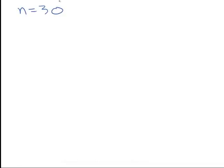Let's look at a few more examples to make sure you can figure out when order matters or not. There are 30 people in your group and you are going to choose 5 of them to send to a weekend retreat. Does order matter? No — it is a combination: 30 choose 5, because you are just choosing 5 people to send.